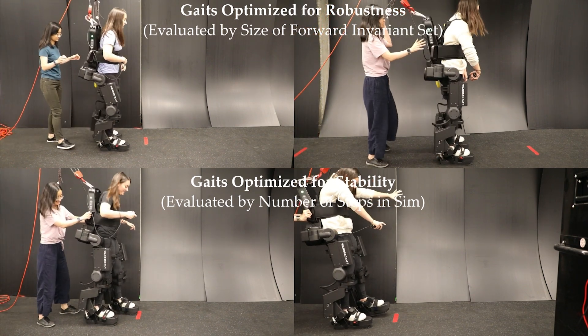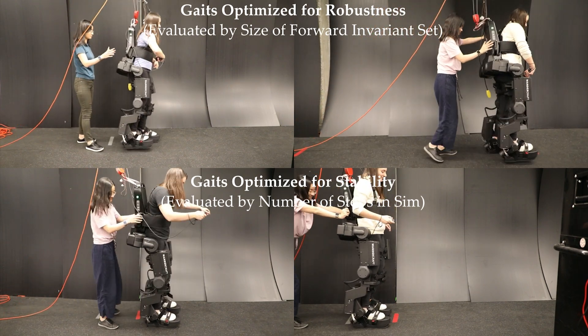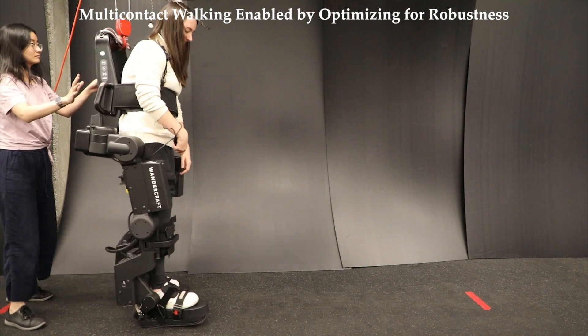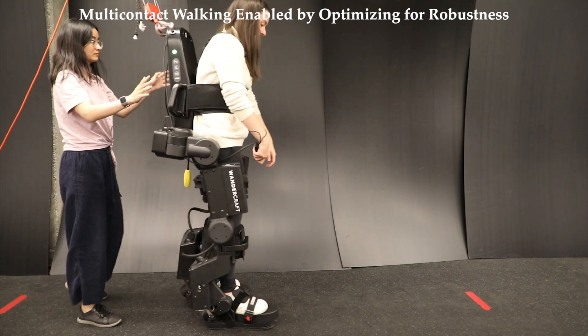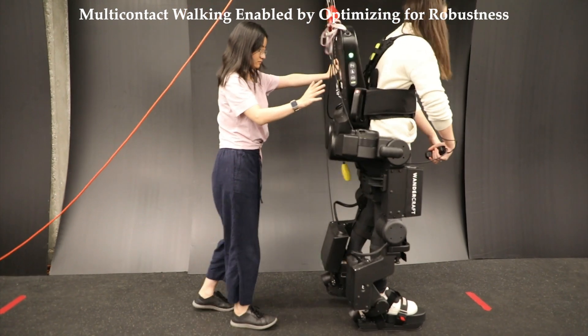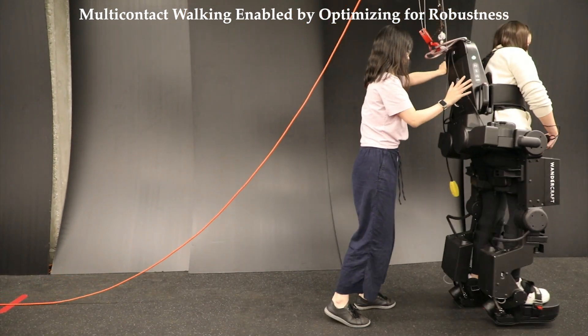Overall, this work showed how discrete-time barrier functions can be leveraged to certify hybrid forward invariants of the reduced step-to-step dynamics and demonstrate how this approach can be used as a metric of robustness for bipedal locomotion, resulting in robust flat-foot and multi-contact walking on the Atalante lower body exoskeleton.